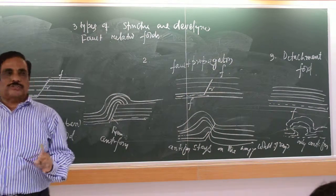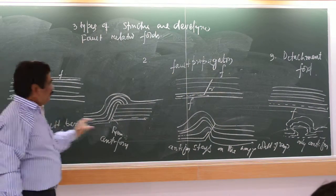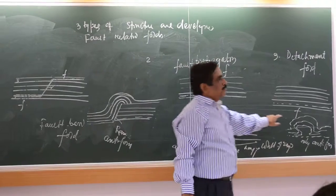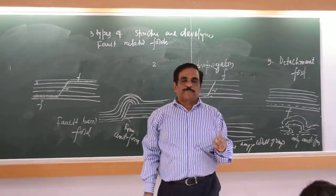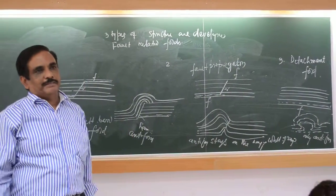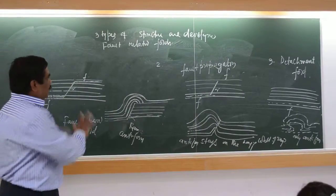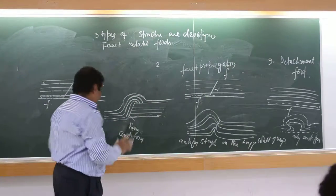Three types of structures: band fold, propagation fold, and detachment fold. So these three structures develop over the salt band. Now, if we combine them, let me just combine here.